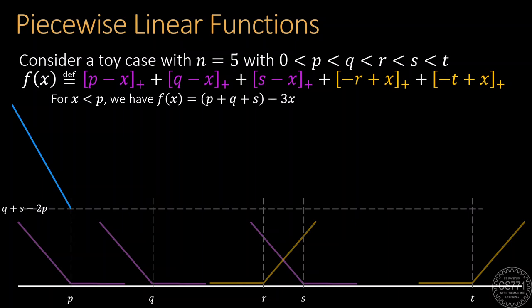This tells us that for values of x less than p, the function is simply a linear function, p plus q plus s minus 3 times x.